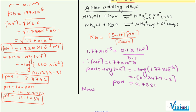So now, pH equals to 14 minus POH, 14 minus 4.7521, I think so 9.2479.